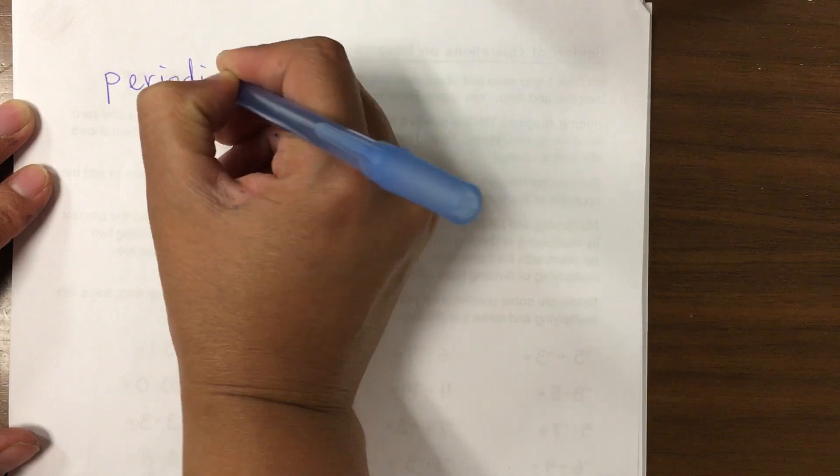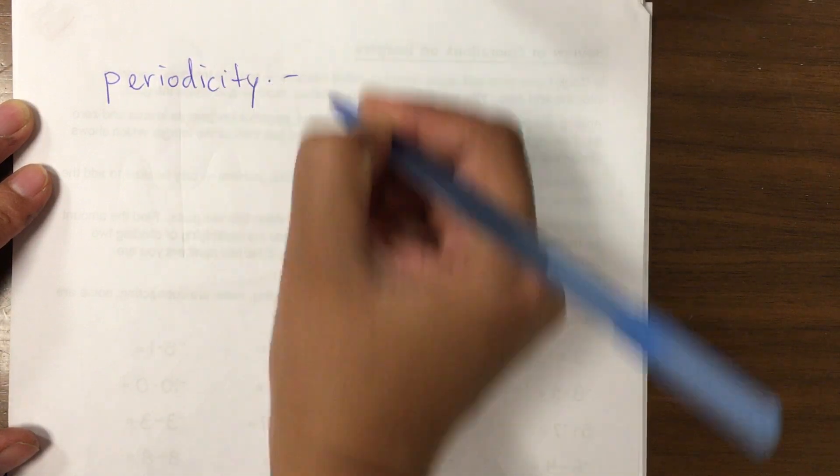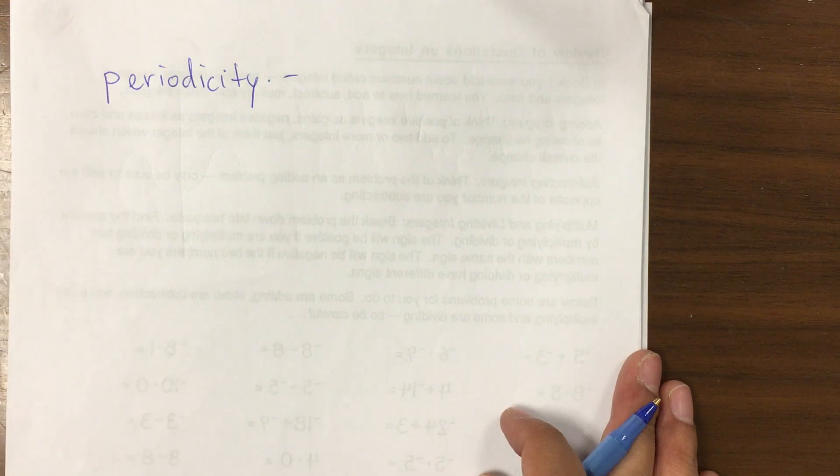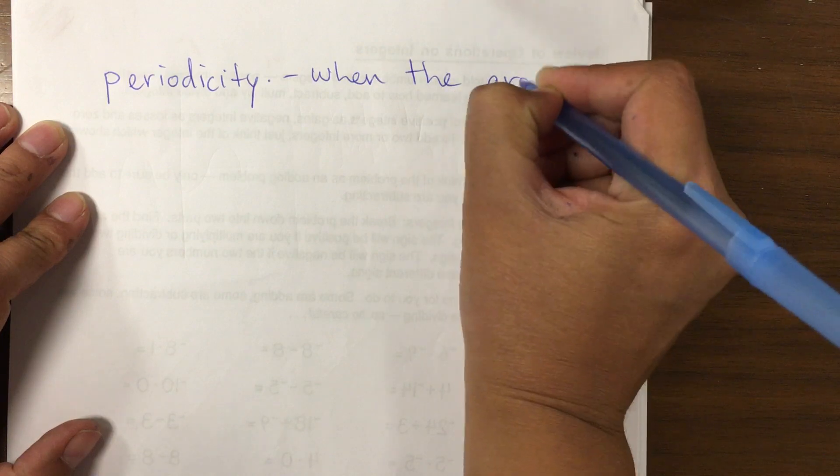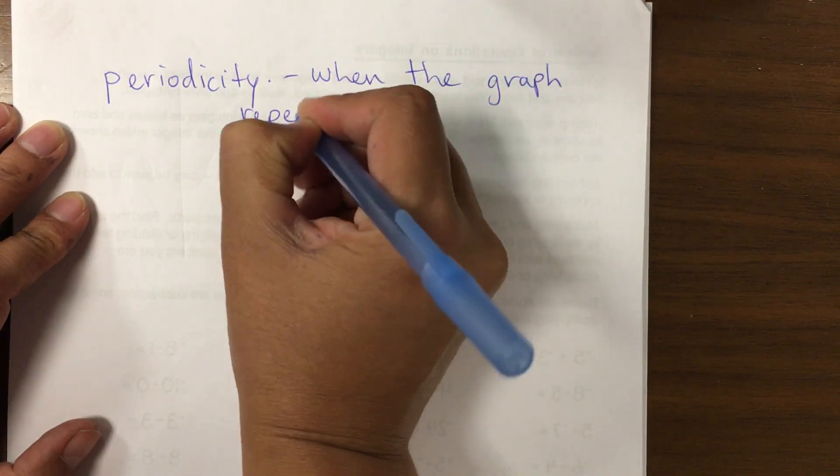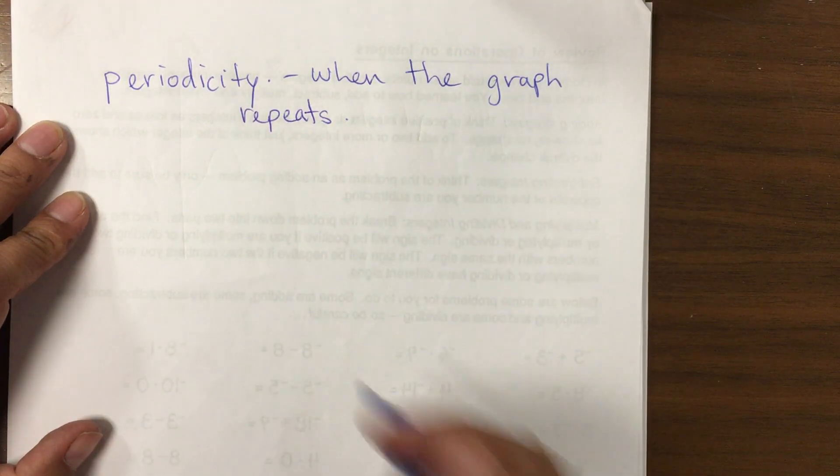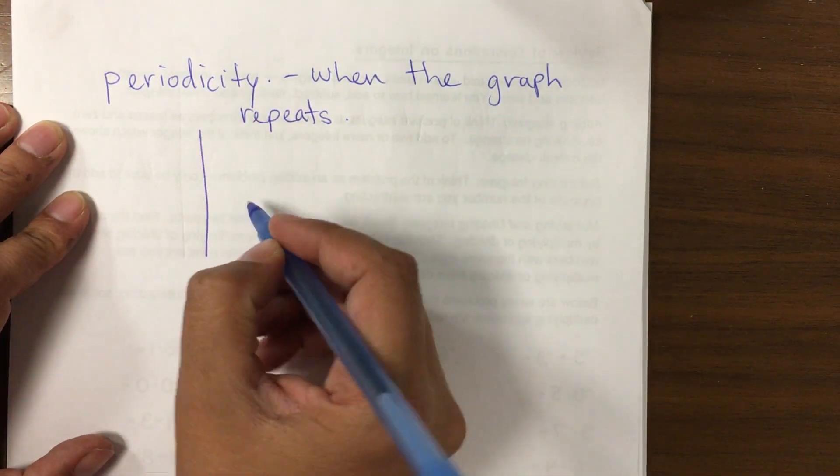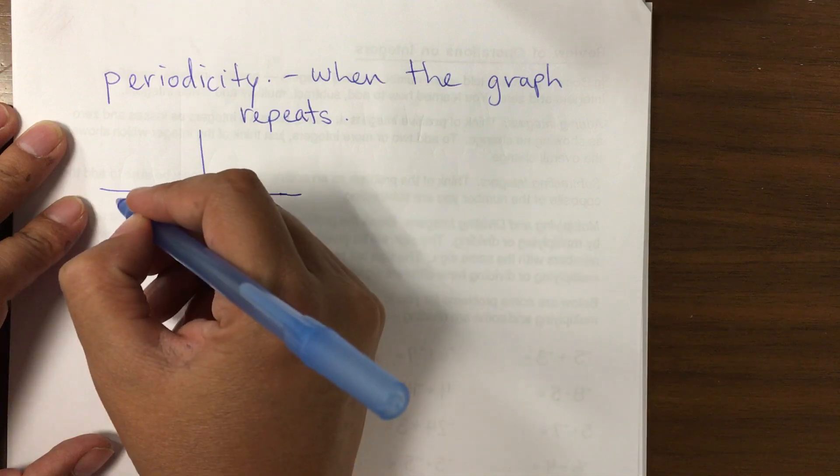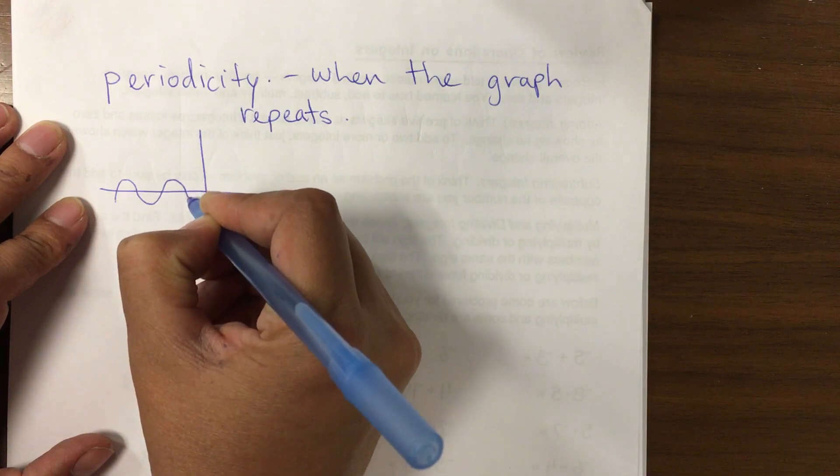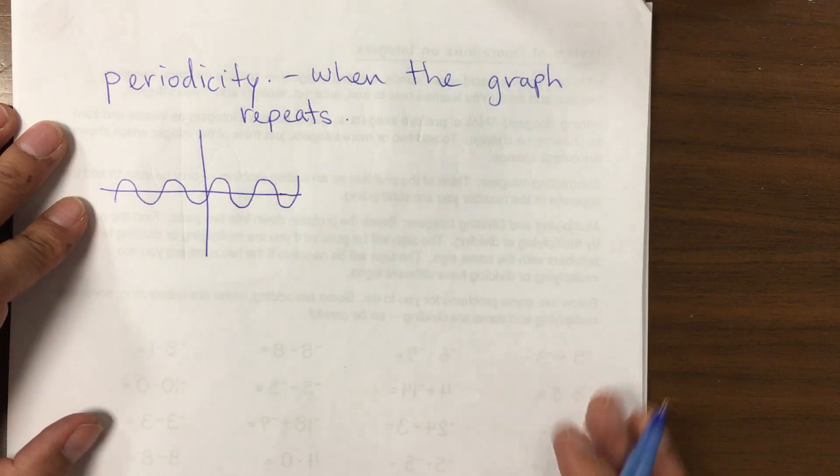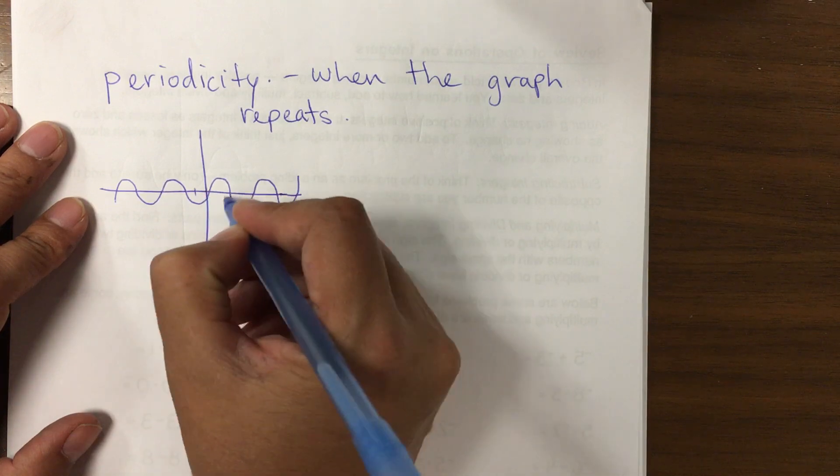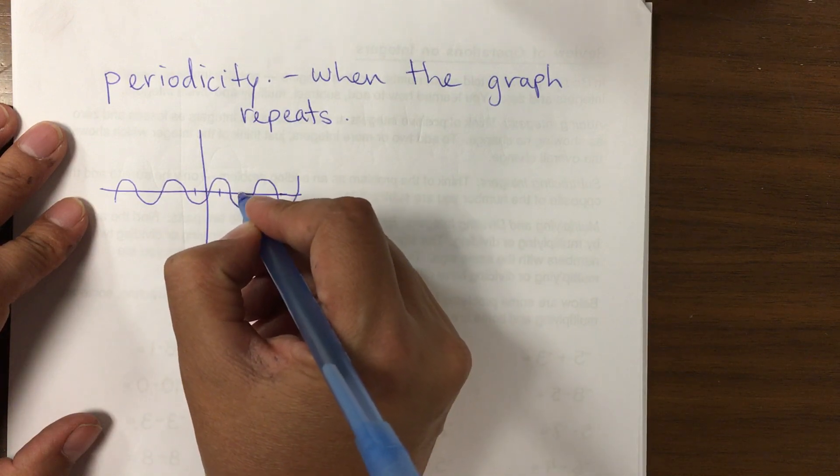So what is periodicity? Periodicity is when the graph repeats. And we might have a graph that looks something like this.